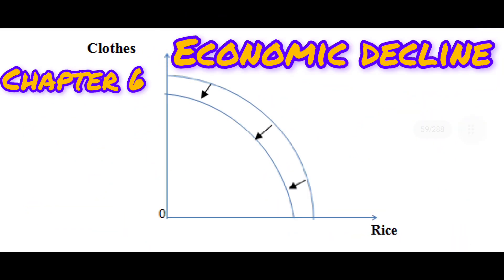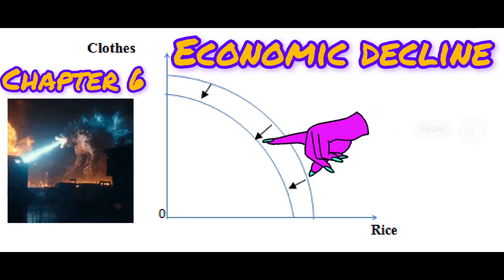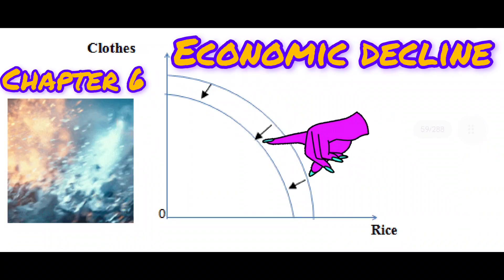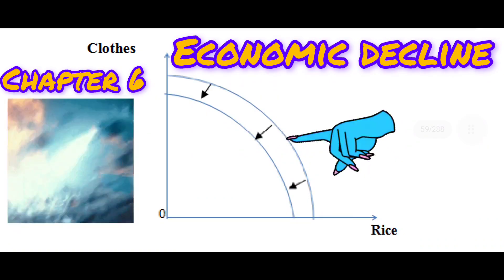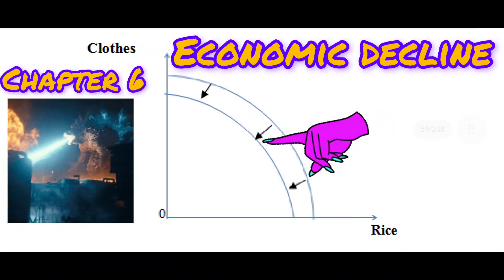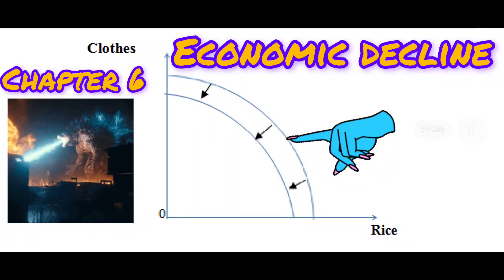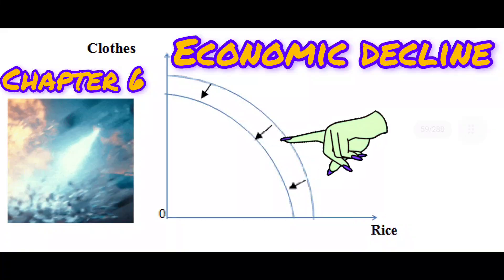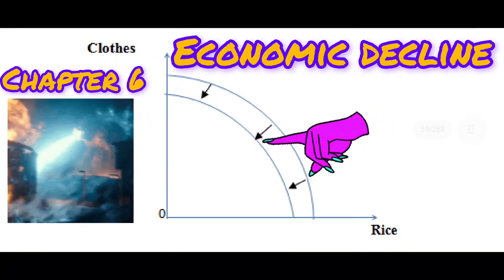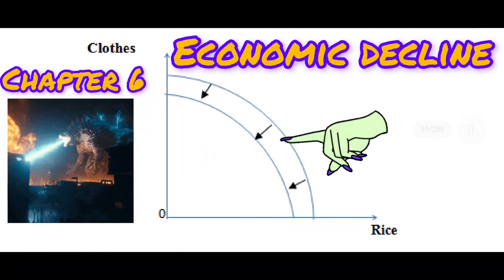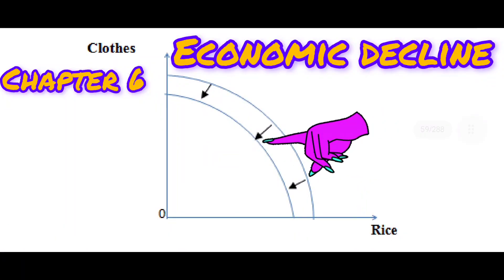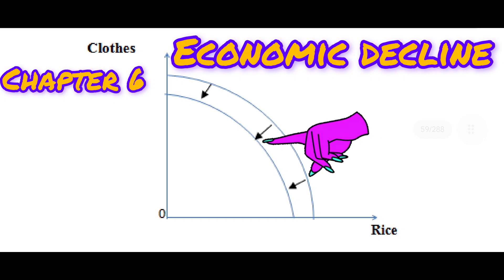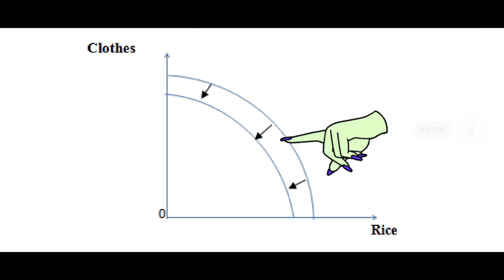Economic decline is the opposite of growth. It happens when resources are lost or destroyed, leading to a reduction in production capacity. Natural disasters or wars can cause this decline. A leftward shift of the PPF indicates economic decline due to a decrease in resources, as shown in the graph.